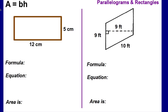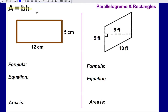The formula for finding the area of a rectangle or a parallelogram is A equals b times h. The b stands for the base and the h stands for the height.